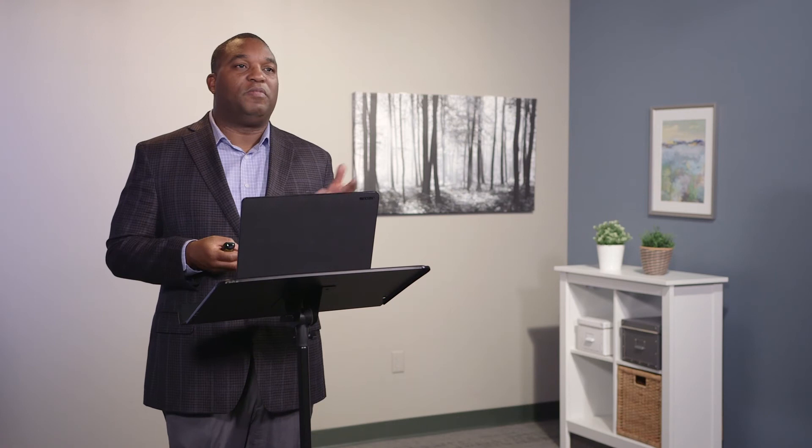Histograms can show distributions with different levels of skewness. Skewness simply means that you have more data on one end of a range than on the other. For example, if you have a range of data from 1 to 10, skewness would show up if you have a lot of 10s, 9s, and 8s but not many 0s, 1s, and 2s — or on the other side, a lot of 1s and 2s but not many 9s, 8s, and 10s. That's skewness.